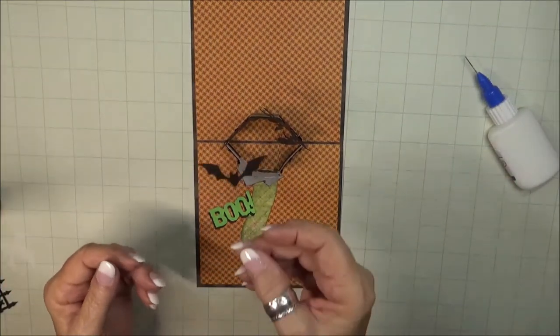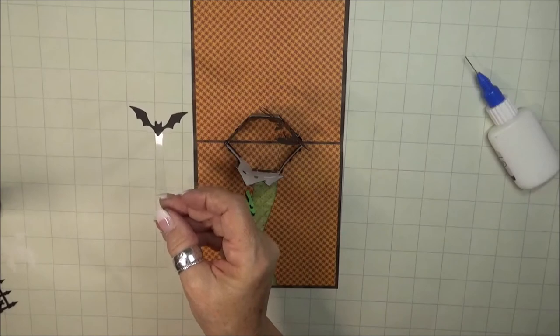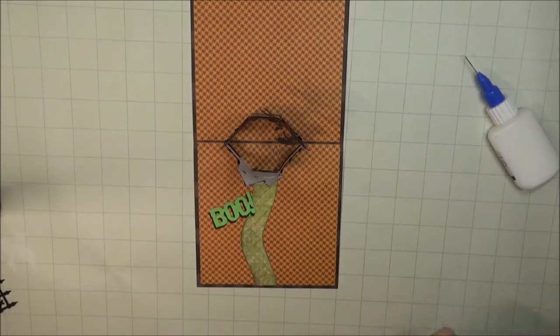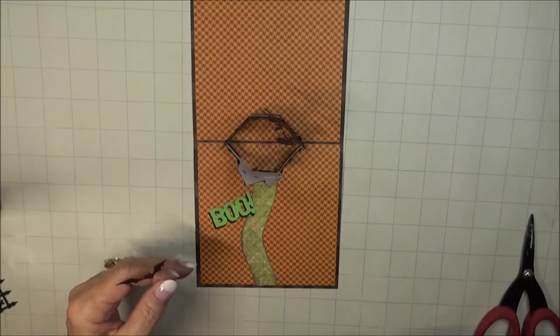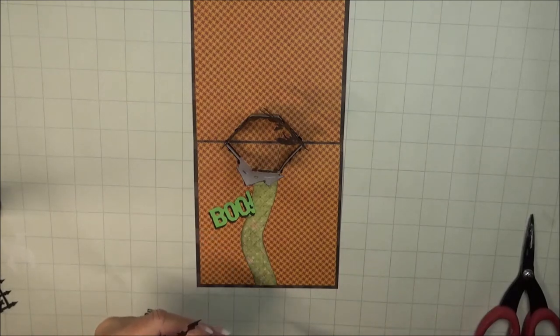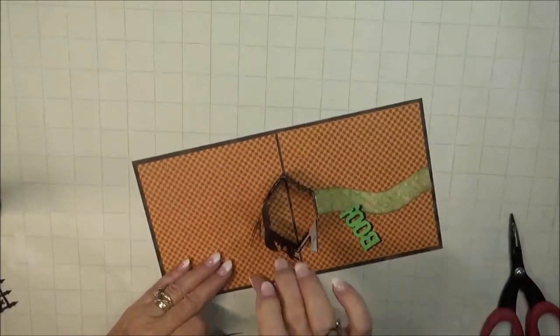Next up is the bat, which I've added to a piece of clear acetate. Cut off the acetate to the length I wanted, added some glue, and now I'm going to glue it right to the back over the graveyard.